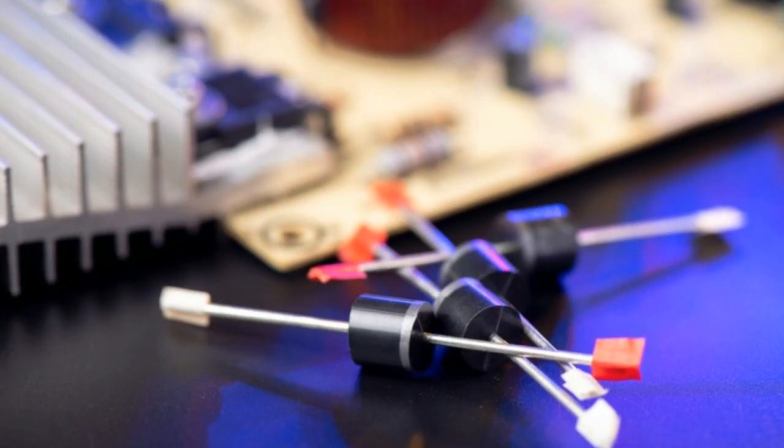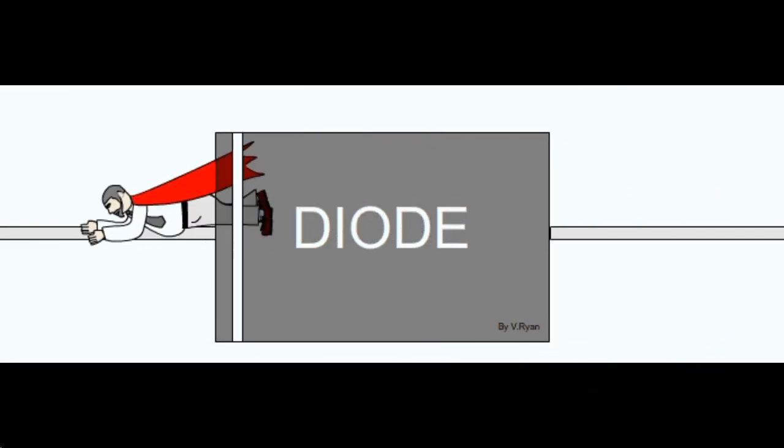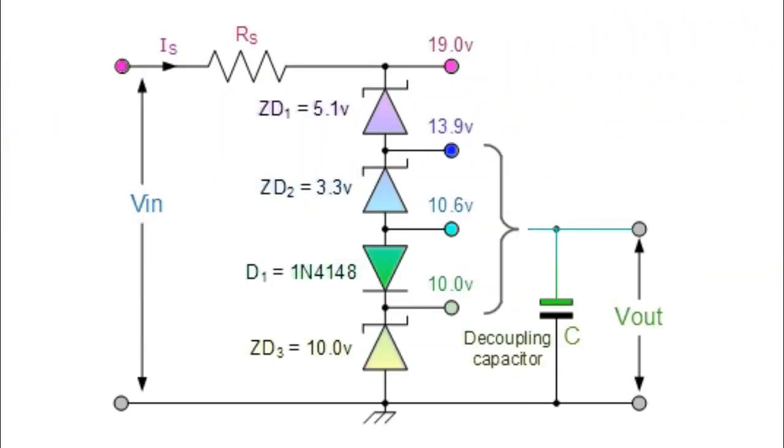The silicon diode always drops to 0.6V to 0.7V under forward bias conditions. Of course, the VIN source voltage must be higher than the largest output reference voltage, and in our example it is slightly higher than 19V.